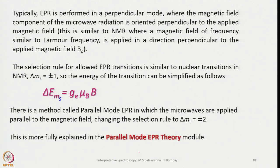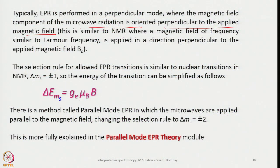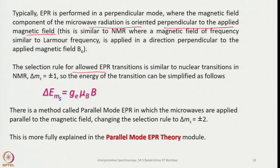EPR is typically performed in perpendicular mode, where the magnetic field component of the microwave radiation is oriented perpendicular to the applied magnetic field — analogous to NMR where radio frequency is applied perpendicular to B₀. The selection rule for allowed EPR transitions is ΔmS = ±1.